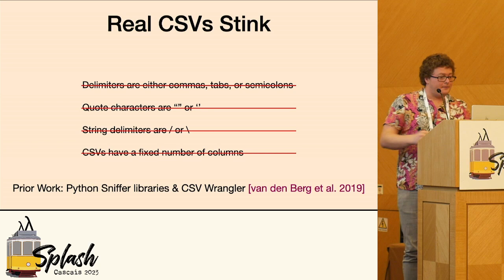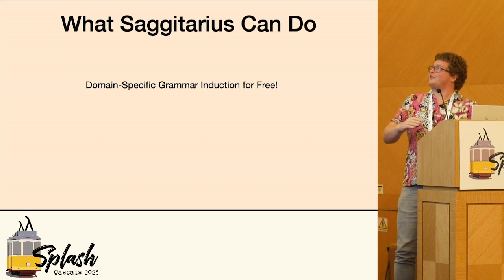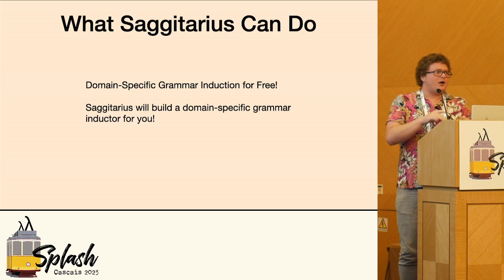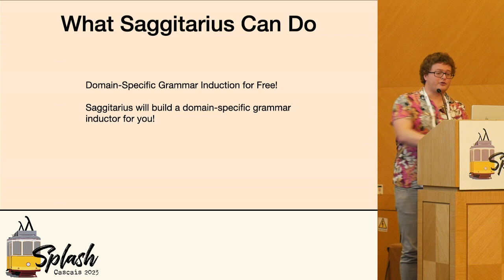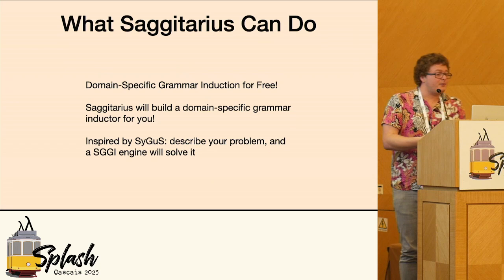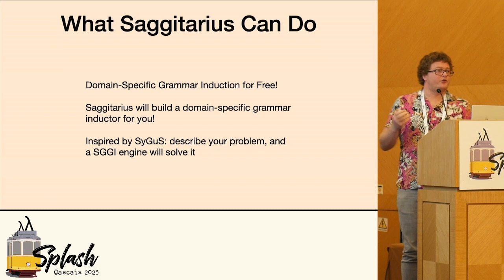So what can Sagittarius, which is our language, do? Well, we're going to say that you can do domain-specific grammar induction for free. Essentially, rather than code up all these custom little tools, Sagittarius will actually build a domain-specific grammar inducer for you. And this is really inspired by syntax-guided synthesis, where you can describe the problem and a syntax-guided grammar induction engine will solve it for you.